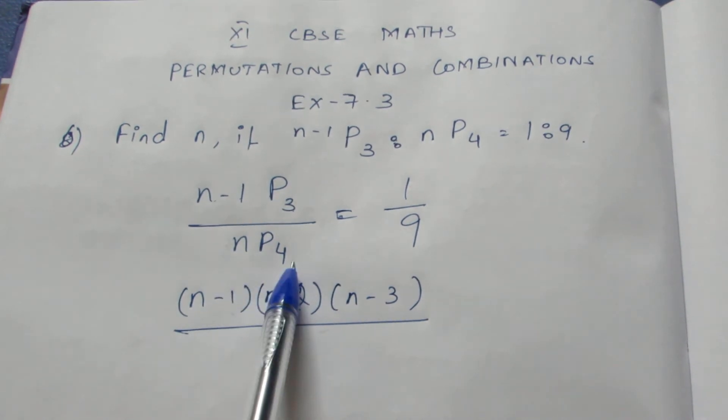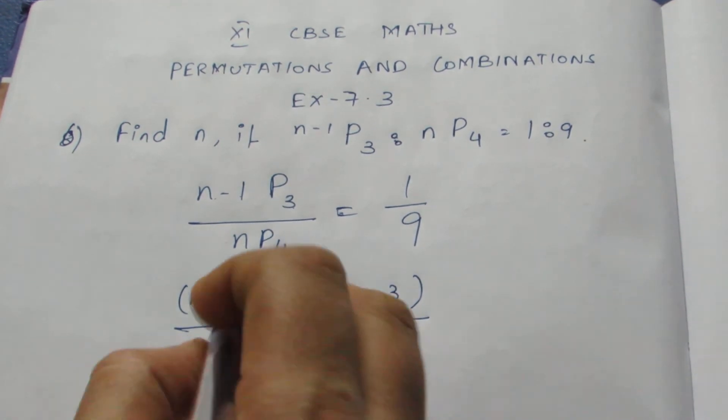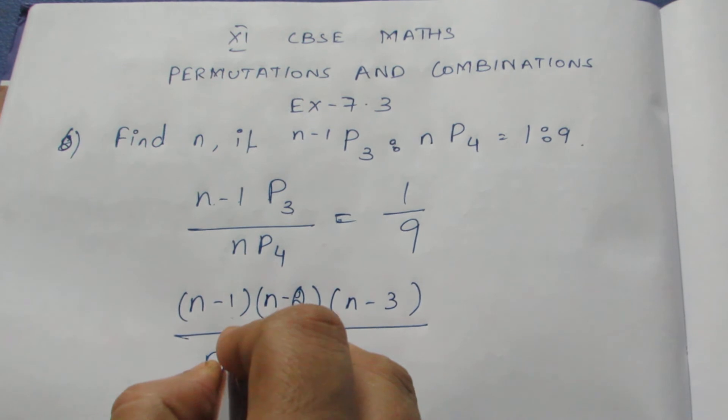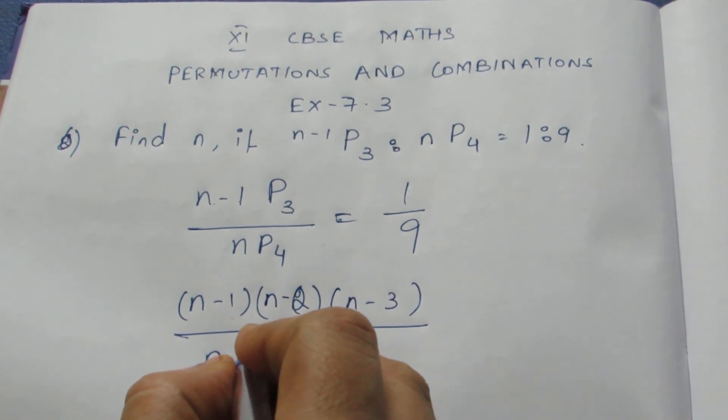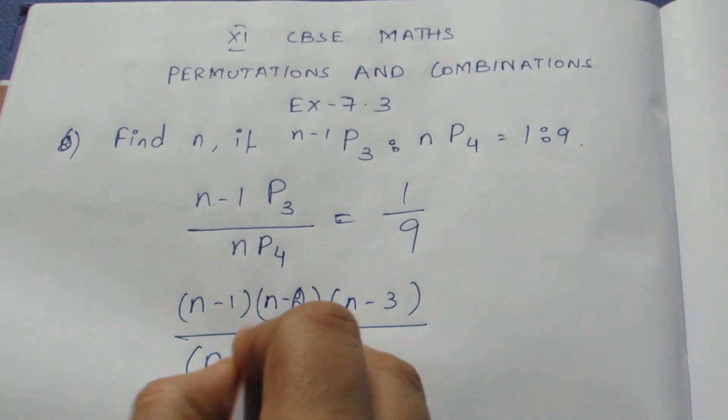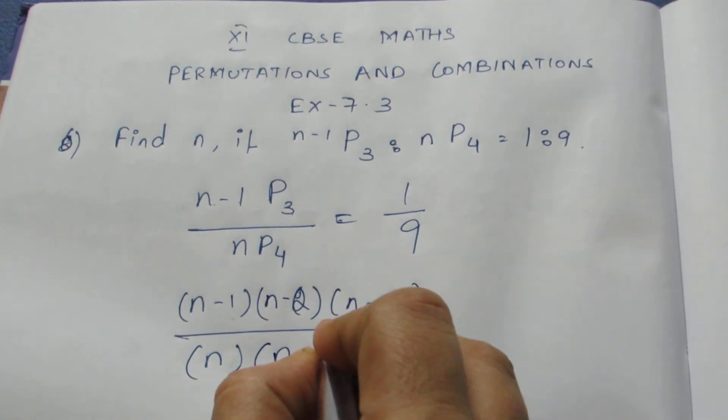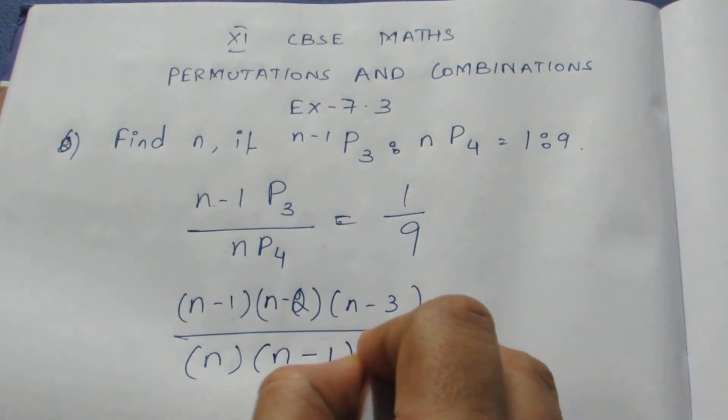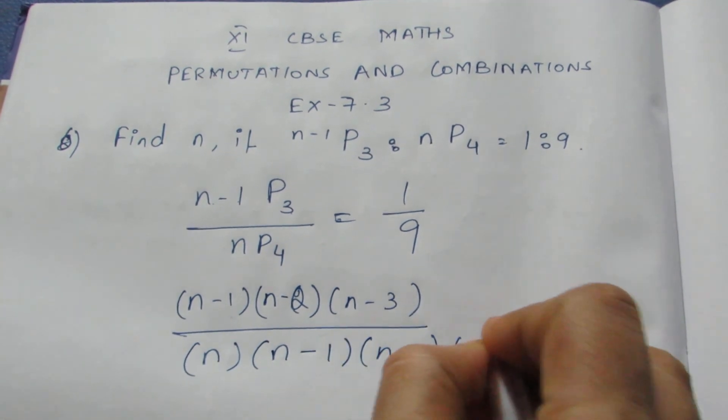For N P4, it is N into N minus 1 into N minus 2 into N minus 3.